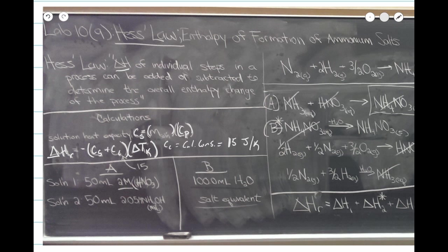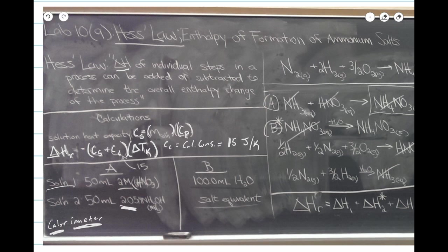This experiment will consist of two reactions taking place in a styrofoam cup setup, which is going to act as our calorimeter — an instrument used to measure the amount of heat involved in a chemical reaction. For Part A, we're going to react 50 milliliters of a 2 molar strong acid (solution one) and 50 milliliters of 2.05 molar NaOH together.